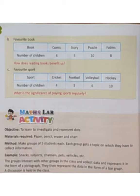Now, Part C — favorite sports. We have the name of sports and the number of children who like them. You will draw a bar graph based on this data on your own. This was Exercise 12.2. I hope the concept of bar graphs is clear to you. Do the exercise in your notebook and keep practicing.